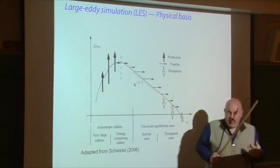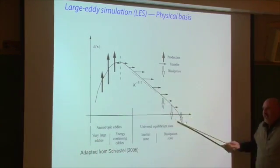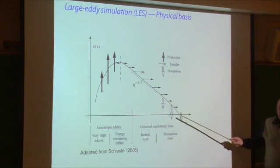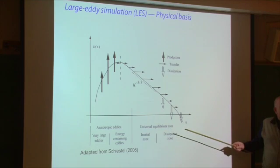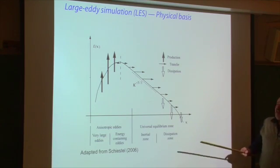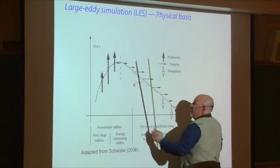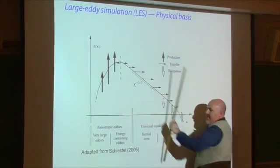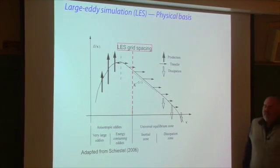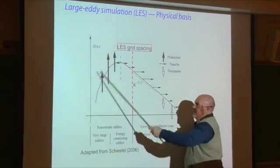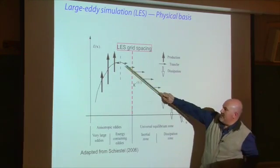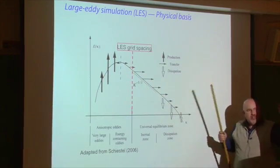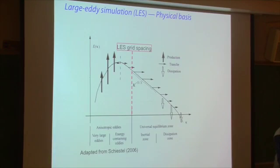A model ideally has to resolve all of this — down to scales of molecular viscosity, which in the atmosphere is like millimeter size. We're not going to run our cloud model at millimeter grid spacings. So in large eddy simulation, we pick somewhere in the middle of the power spectrum where it's nicely sloped, do a low-pass filter on the flow, and say we're going to try to resolve all the energetic anisotropic stuff, while the small-scale stuff we're going to try to model somehow — and hope it's nice and isotropic and relatively easy to model. That's the basis of large eddy simulation.